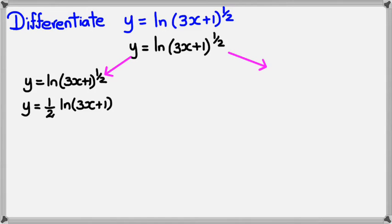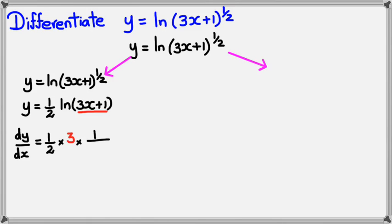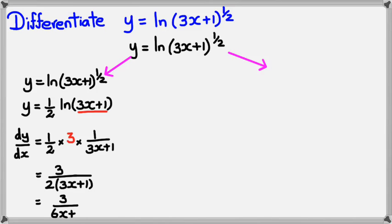From this point I can differentiate: dy/dx equals 1/2 multiplied by the derivative of whatever's inside the bracket. Differentiating 3x+1 gives 3, multiplied by 1 divided by (3x+1). Simplifying: 3 divided by 2(3x+1), which further simplifies to 3 divided by (6x+2).